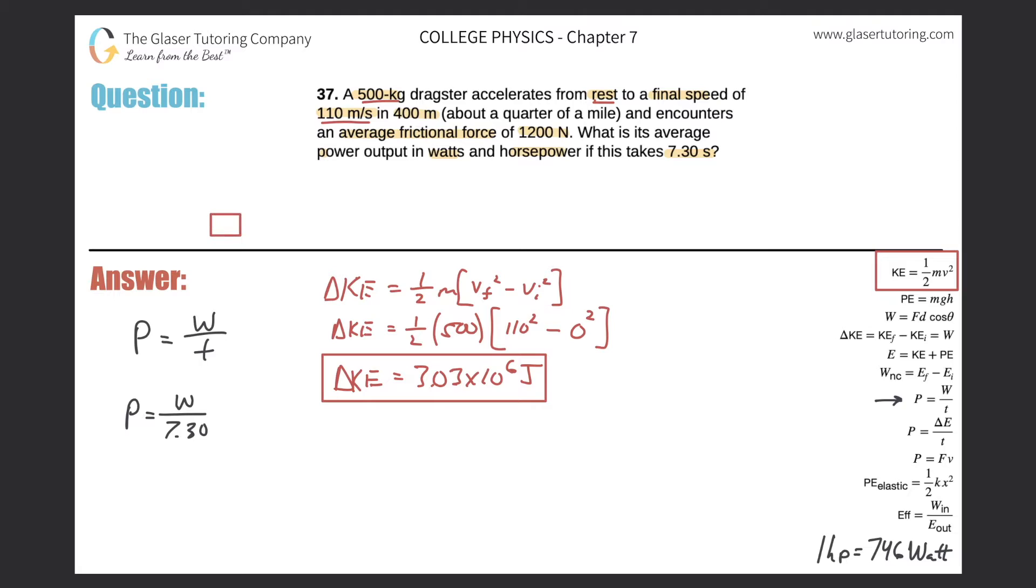So pretend that this is the dragster. It's a cool looking dragster, and it's going to travel some distance. It's going to travel 400 meters. Once it gets to its final location, it has a speed of 110 meters per second, and its kinetic energy is 3.03 times 10 to the six joules.